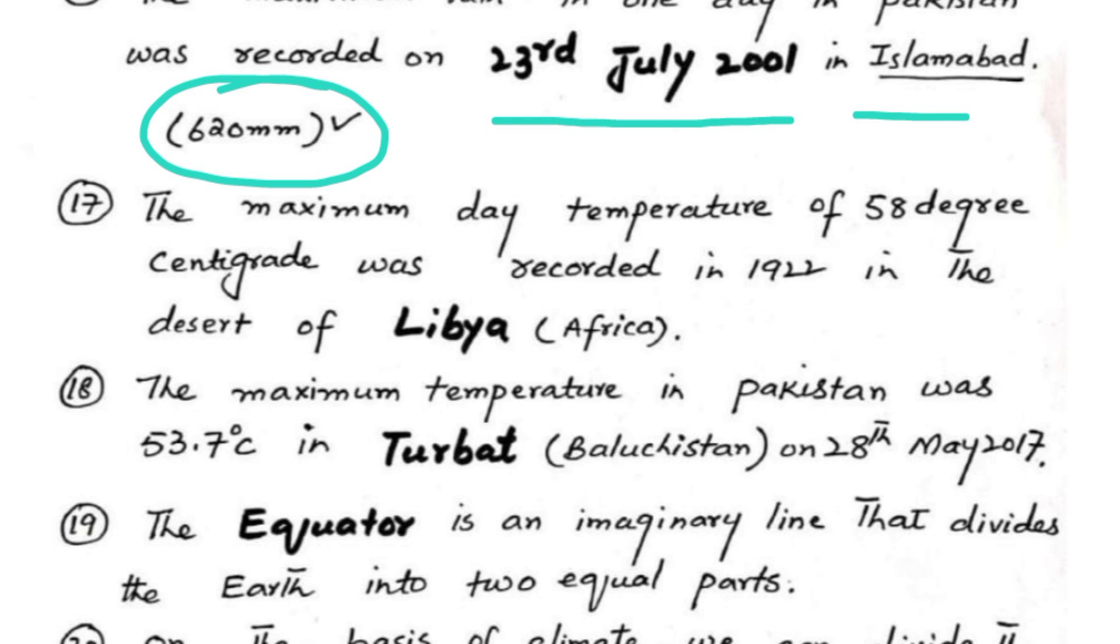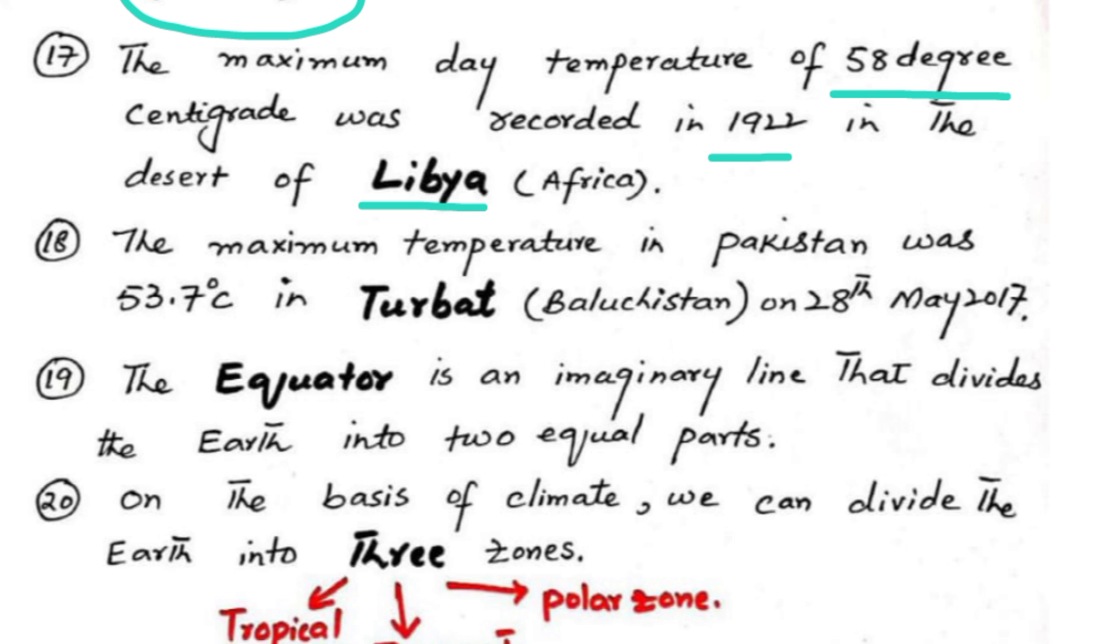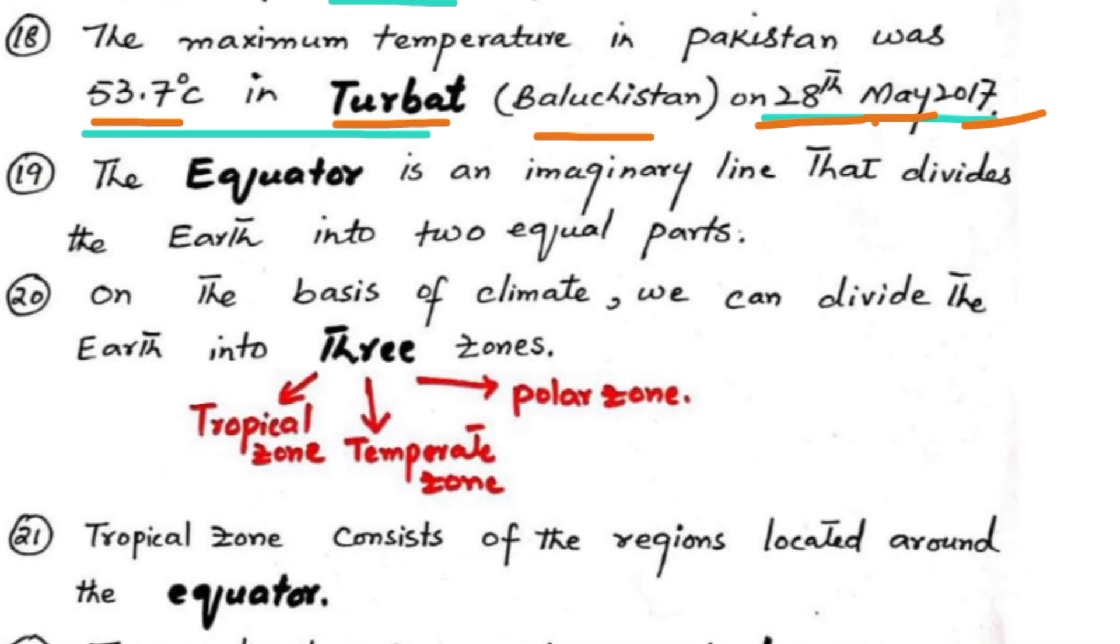The maximum day temperature of 58 degrees centigrade was recorded in 1922 in the desert of Libya in Africa. The maximum temperature in Pakistan was 53.7 degrees centigrade in Turbat, Baluchistan on 28th May 2017.